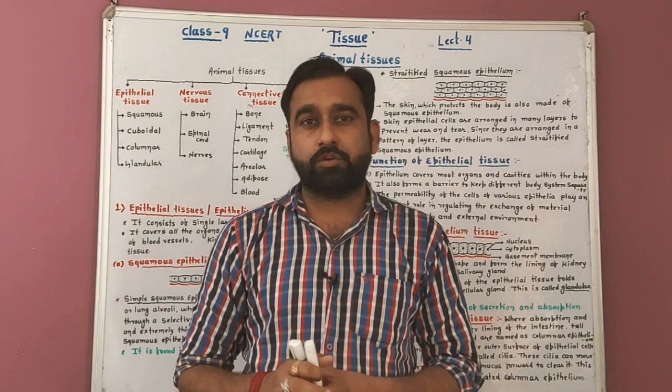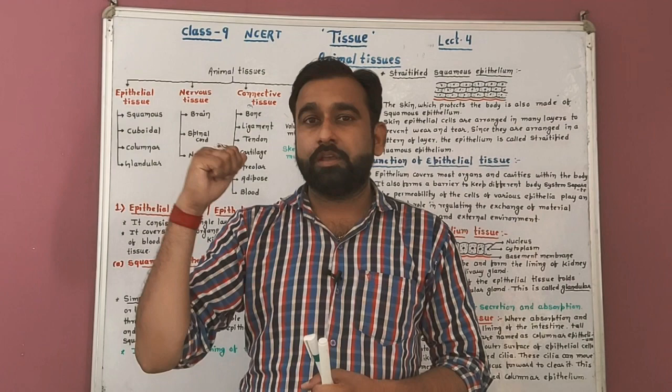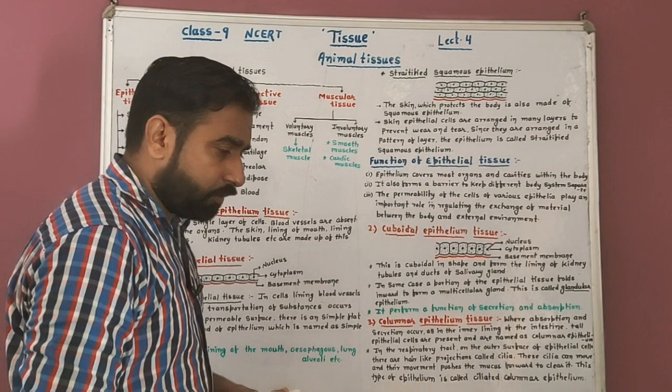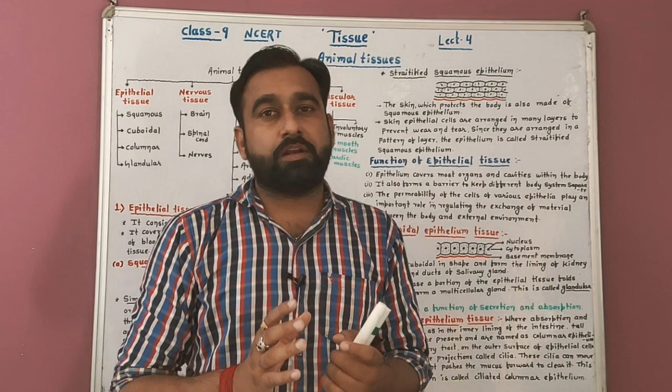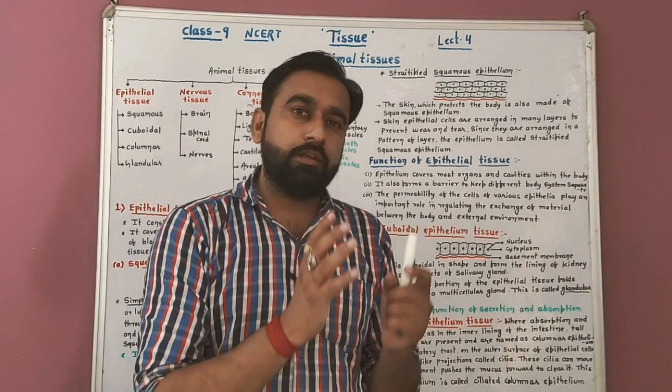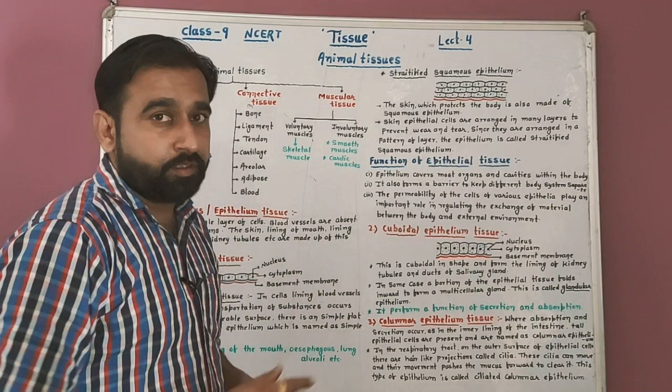Today we start the second part — a very important part of this chapter — Animal Tissue. What is tissue? A group of cells which are similar in function, structure, and origin, and they perform a unique function — this is called tissue.